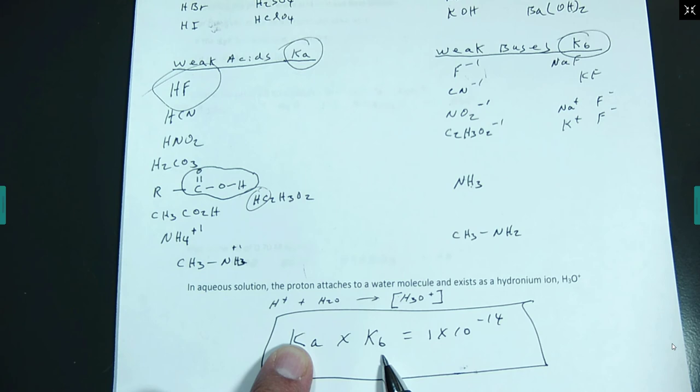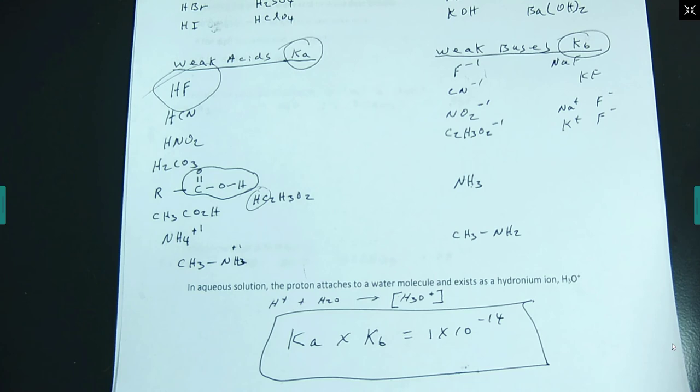They do that in a couple of places on the midterm. Sometimes they're nice and give you the right constant; sometimes they give you the wrong constant to see if you have your act together enough to use Ka × Kb = 1×10⁻¹⁴ to convert.